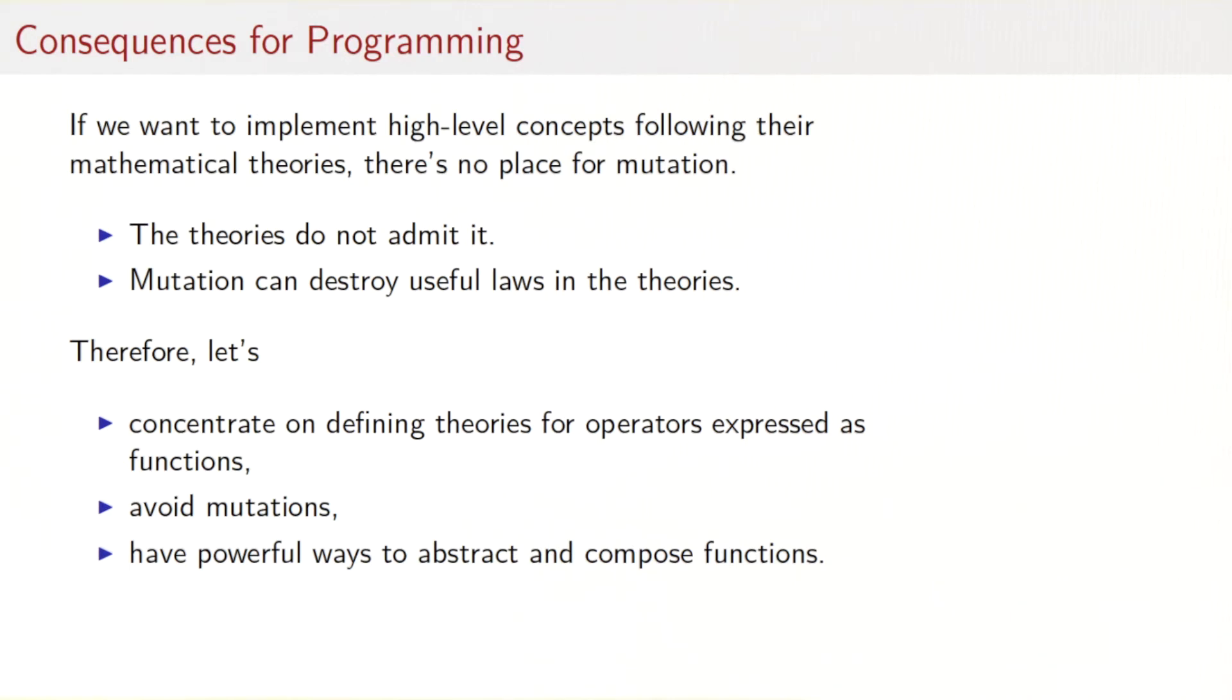These were observations about theories in mathematics. What are the consequences for programming? Well, if we want to implement high level concepts following the mathematical theories, we find that there's really no place for mutation. First, the theories do not admit a mutation operator. And second, if we would add it, it could in fact destroy useful laws in the theory. That leads to a new style of programming where we concentrate on defining these theories for operators which would be expressed as functions. We want to avoid mutations. If we are going to do without something, we want to gain something else. The things we gain is to get powerful ways to abstract and compose functions. So a style of functional programming means avoid mutations, get new ways to abstract and compose functions.